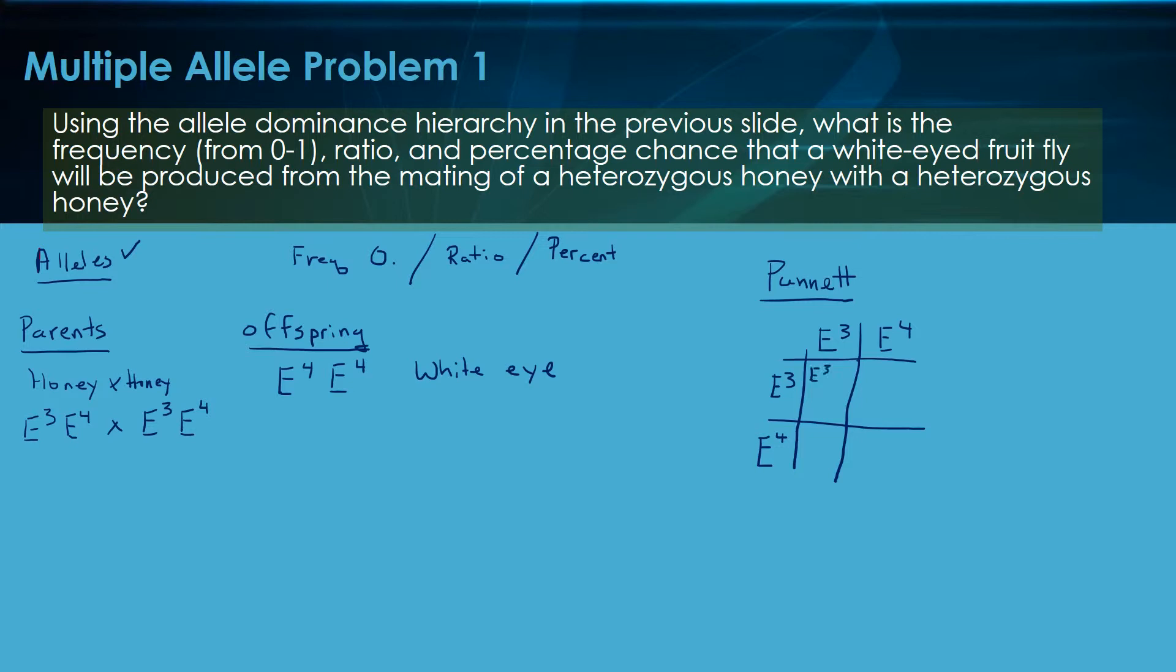Some of the offspring are going to be E3, E3, homozygous honey. Here's heterozygous honey. Here's another heterozygous honey. Take a look at this though. One out of four, or 25% of the offspring, should be white-eyed.